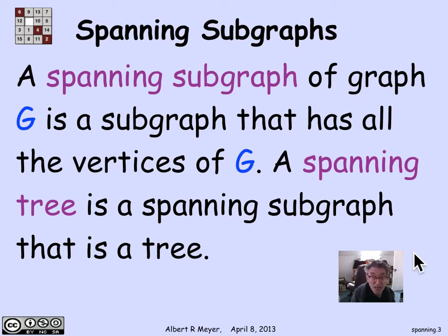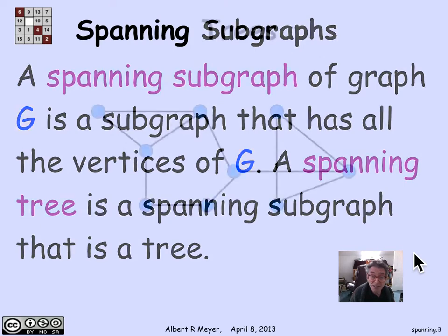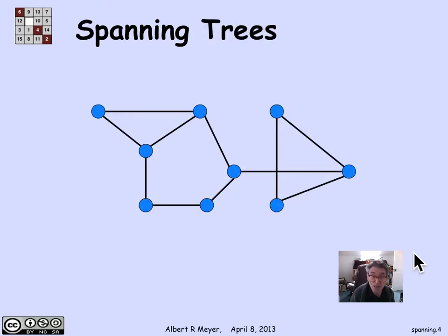Not all graphs are going to have a spanning tree because the tree has to be connected. If the original graph is not connected, there's no way you can find a spanning tree using only the edges that are there already. But it turns out that if the graph is connected, it's guaranteed to have a spanning tree.